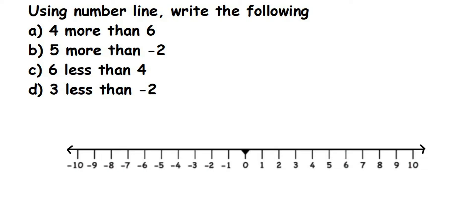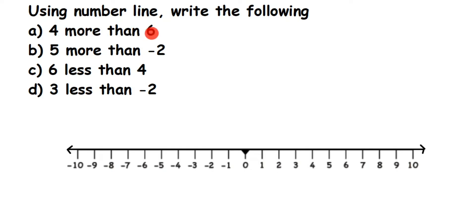Hi everyone, here's a question from integers. The question is: using a number line, write the following — four more than six. We have to show this on the number line and then write and solve it. Whenever we have 'more' it means addition; whenever we have 'less' it means subtraction. So four more than six means six plus four.